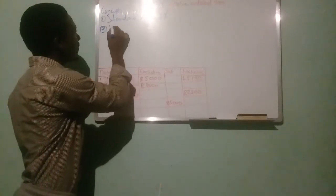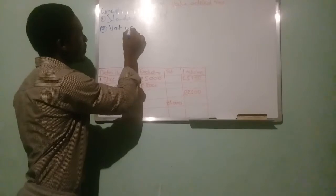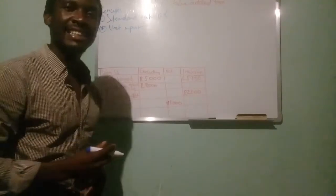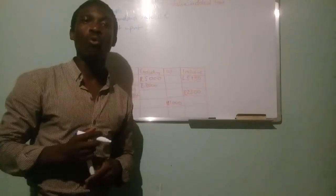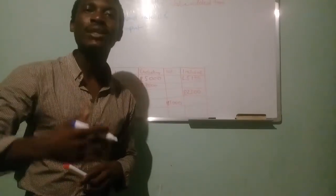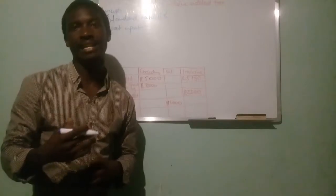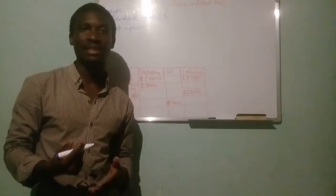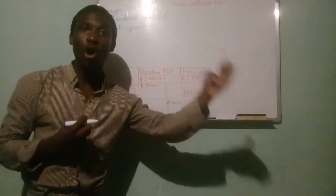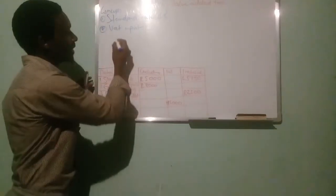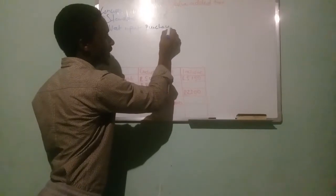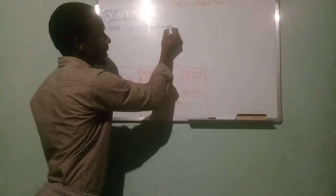There is what you call VAT input. This is the VAT that is charged, or that we as a business are being charged, on all the items that we buy from our suppliers. So we bring VAT inside the business from suppliers — we say it is VAT input. It is the VAT that is charged to us from purchasing.